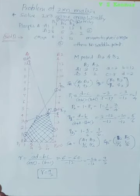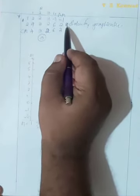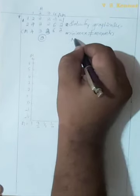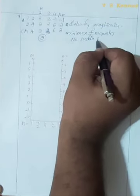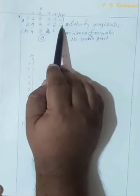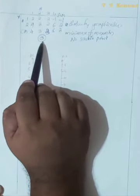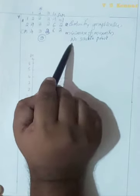Now we move on to the M×2 type. For the second problem, check for a saddle point. The row maxima are 2 and 3. The column minima give a minimax of 3. Since maximin (2) is not equal to minimax (3), there is no saddle point.